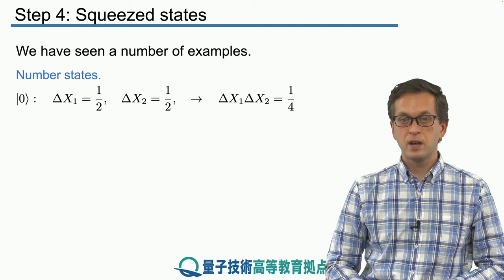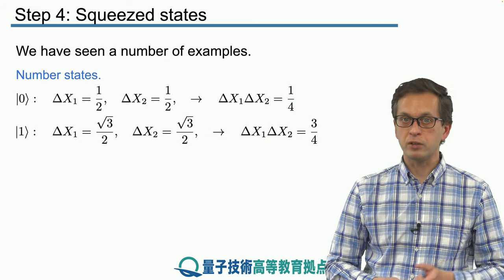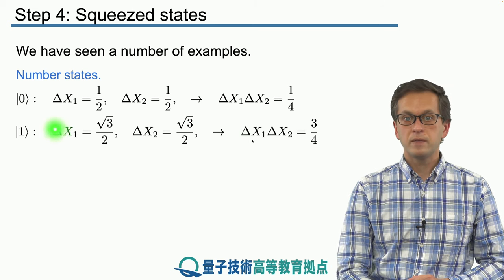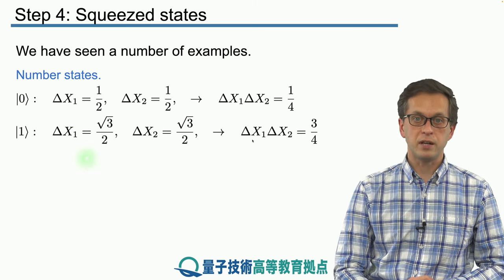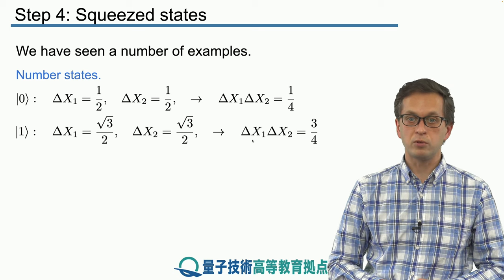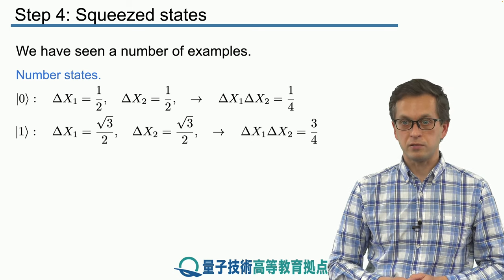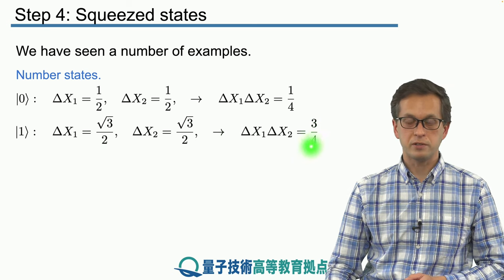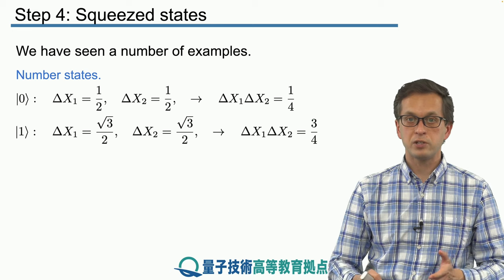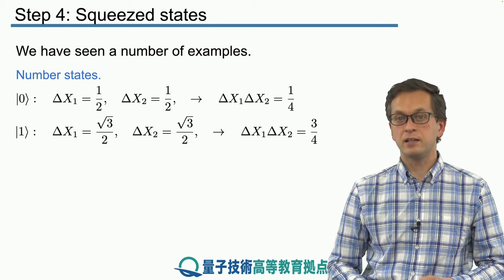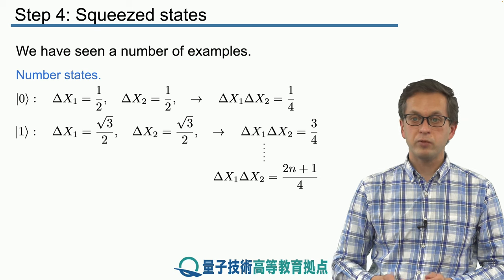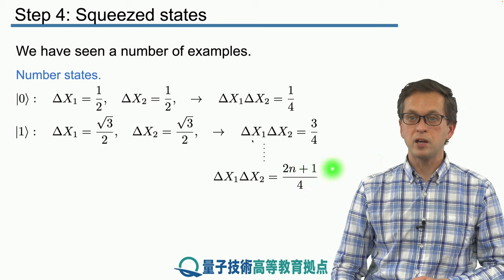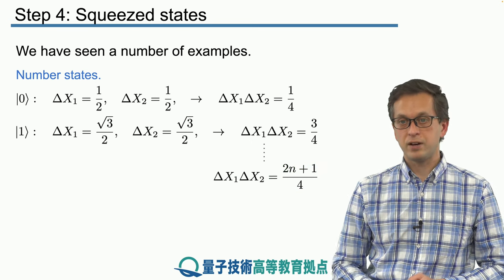If we increase the number of photons in our mode — for example, if we add one extra photon, state ket 1 — then the fluctuations increase. Delta x1 is equal to square root of 3 over 2, and that equals delta x2, so their product is 3/4. The fluctuations increase as we add photons. For a general number state, the product of these fluctuations is given by (2n + 1) divided by 4.